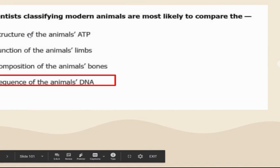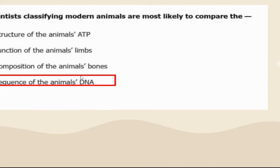Scientists classifying modern animals are most likely to compare the sequence of the animal's DNA. Bone composition or function of limbs might be similar but doesn't mean animals are related. The structure of ATP seems like a strange answer choice. Definitely sequence the animal's DNA.